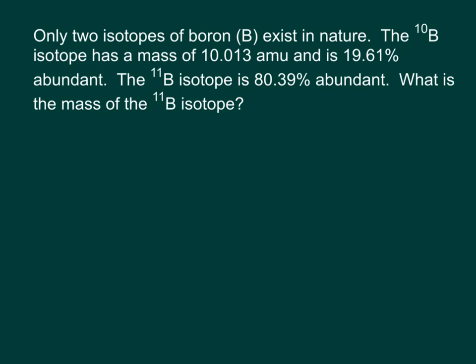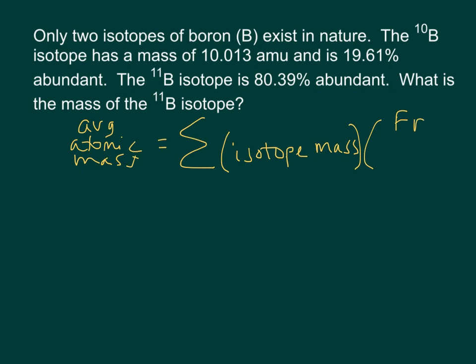We're going to use the same equation as we did in the previous problem, and that is average atomic mass is equal to the sum of the isotope mass for each one multiplied by its fractional abundance.